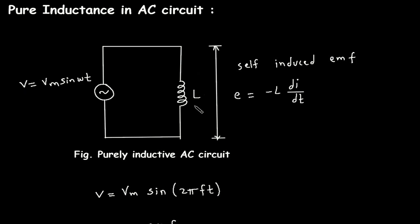The EMF, or self-induced EMF, across this inductor is E equal to minus L di/dt, where E represents the self-induced EMF, L is the inductance in Henry, and di/dt represents the change in current with respect to time.